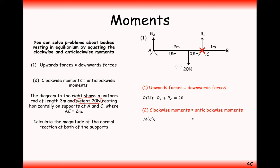Considering the force RA, it is 2 metres away from pivot point C. Imagining the clock around this pivot, it's going upwards on the left-hand side, so that's the clockwise direction. On the clockwise side of the equation I have 2 times RA. For the 20 newton weight, the distance is 0.5 metres, and it goes downwards on the left-hand side of the clock — anticlockwise direction. So on the anticlockwise side I have 0.5 times 20.